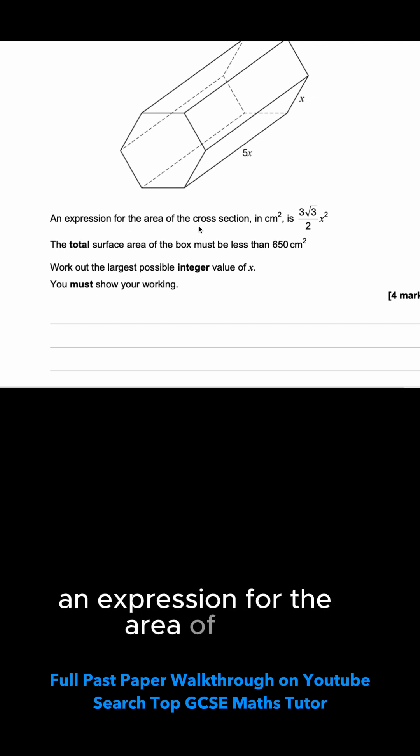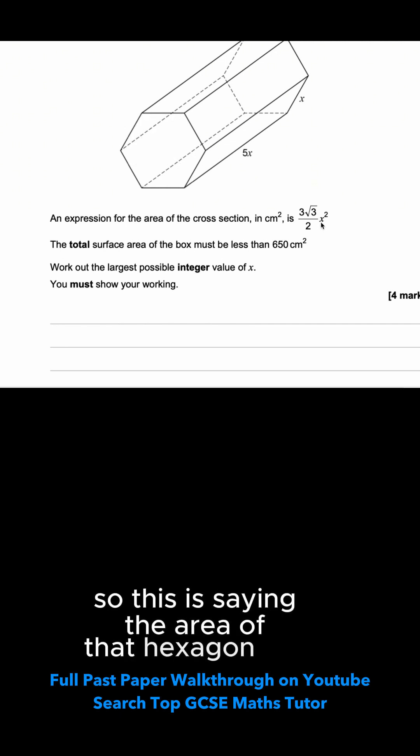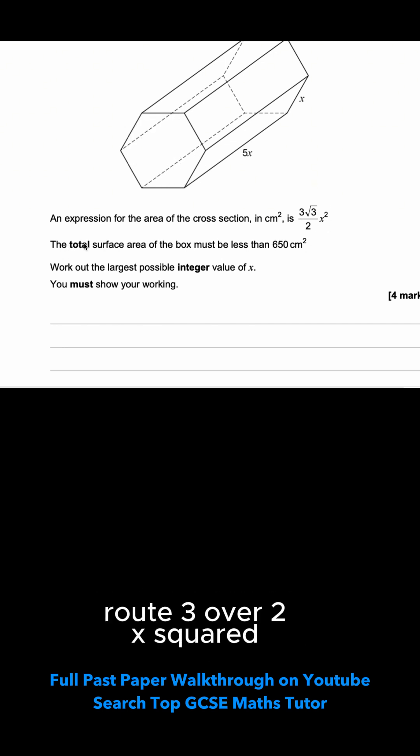An expression for the area of the cross-section in centimeters squared is 3 root 3 over 2x squared. So this is saying the area of that hexagon is 3 root 3 over 2x squared. The total surface area of the box must be less than 650 centimeters squared. Work out the largest possible integer value of x and show your working.